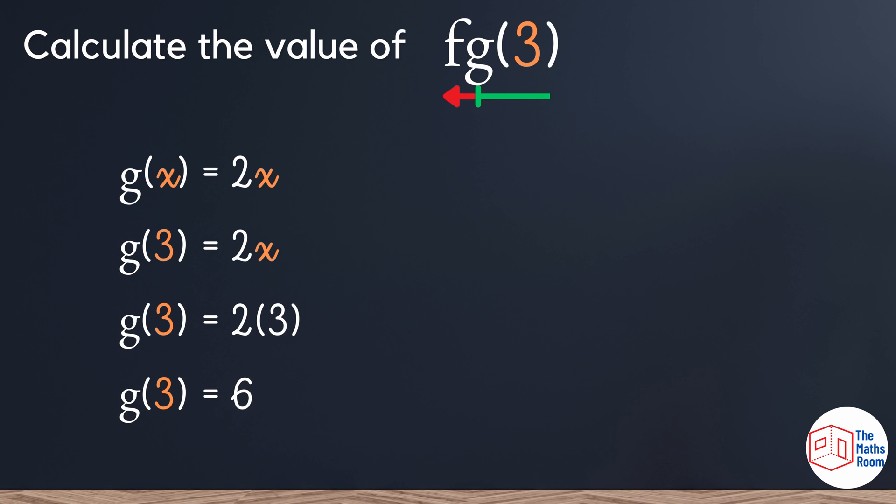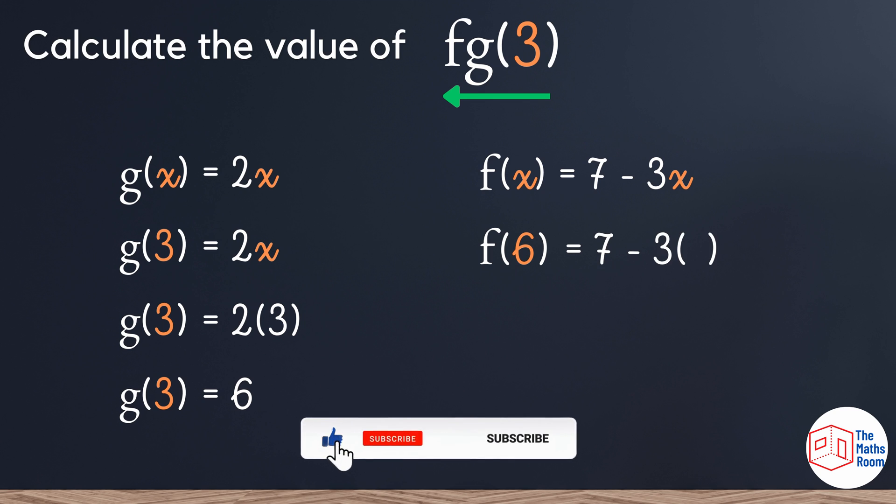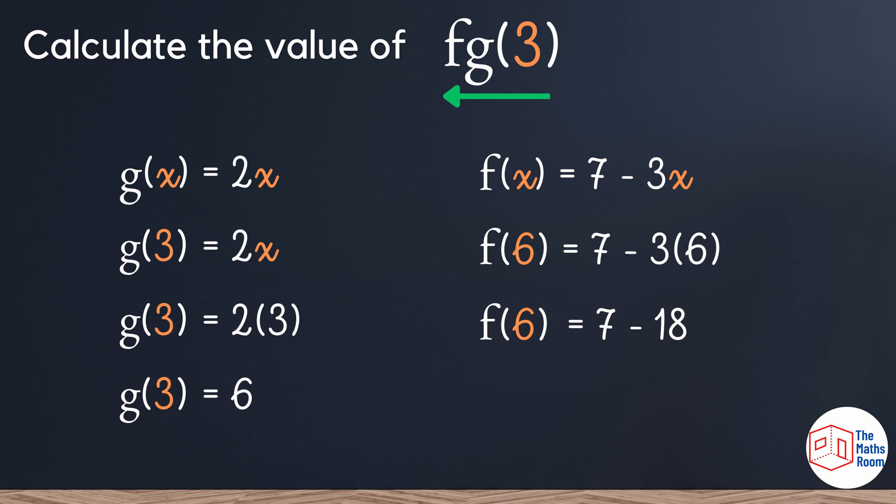Now that we have g of 3, we move into the next section which is f of g of 3. So now we're going to take the result of g of 3, which was 6, and plug that into our formula. Wherever we see that x, we're going to replace it with a 6. Performing the rest of the calculations, we get 11.